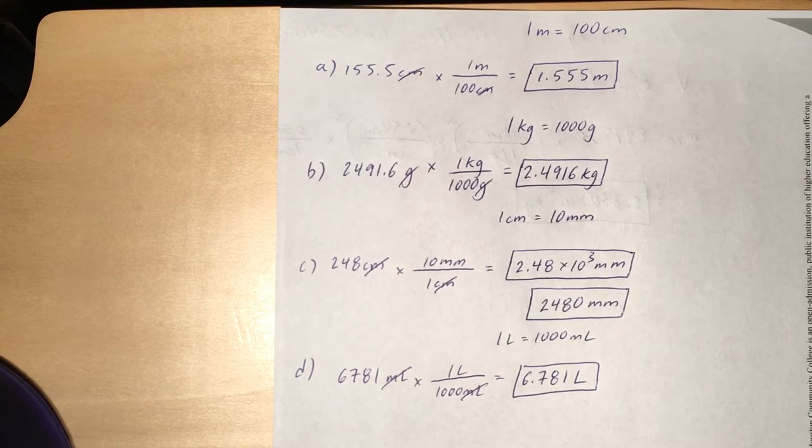So if we use the conversion factor given to us, 1 centimeter equals 10 millimeters. We're going to put the centimeters at the bottom, millimeters at the top.